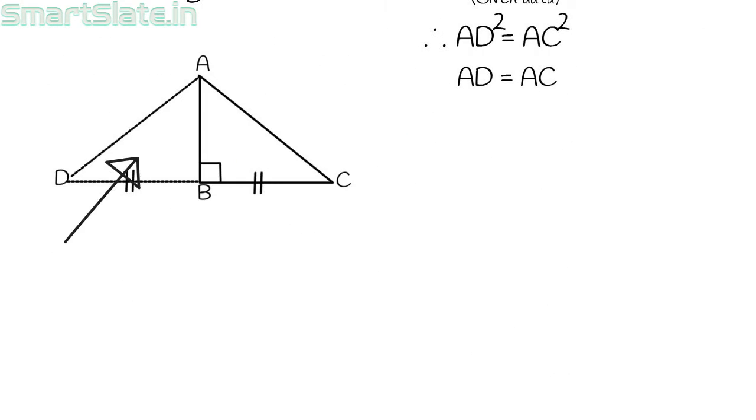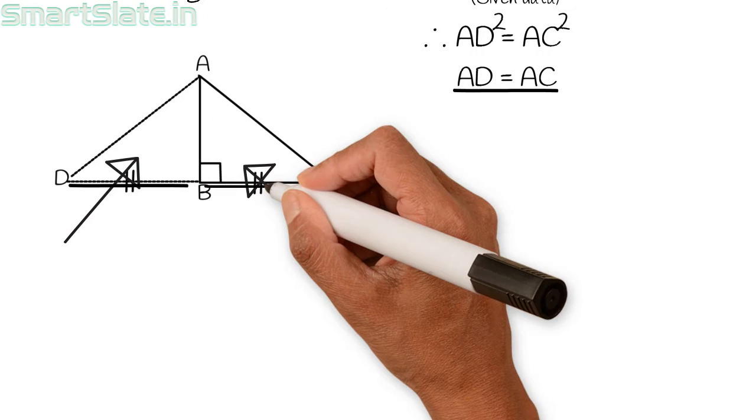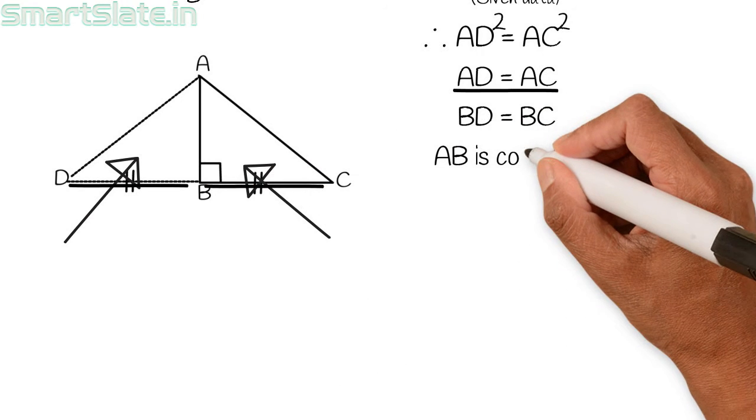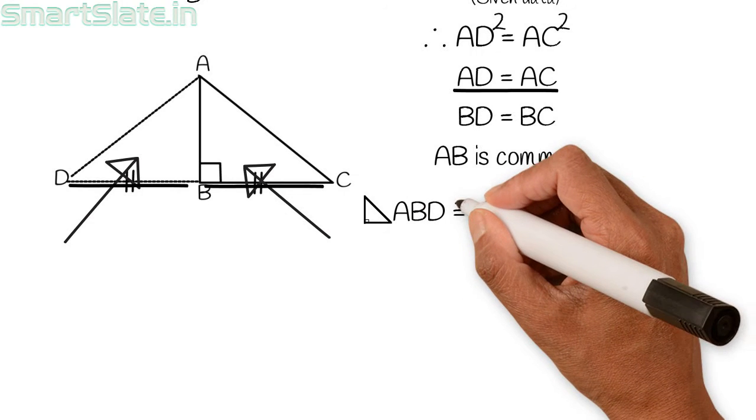Compare the triangles ABD and ABC. AD equal to AC, BD equal to BC, AB is common. Hence triangle ABD is similar to triangle ABC.